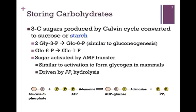Let's look first at starch production. We'll take two molecules of glyceraldehyde-3-phosphate and convert that to glucose-6-phosphate in a process similar to gluconeogenesis. Then the phosphate is moved from the number 6 carbon to the number 1 carbon to form glucose-1-phosphate.